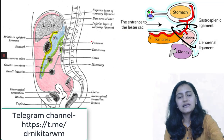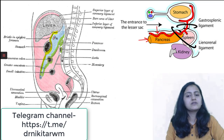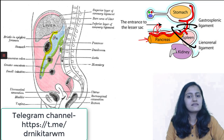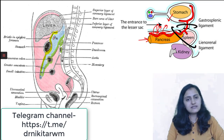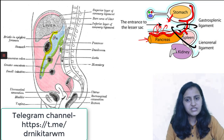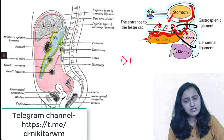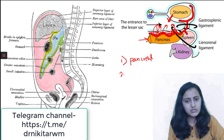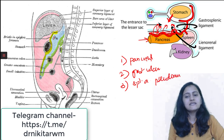What are the causes of collection in the lesser sac? The most common cause is pancreatitis, because the pancreas is posterior to the lesser sac — so whenever there is pancreatitis, fluid accumulates in the lesser sac. The second reason is perforation of a gastric or pyloric ulcer, where the collection goes posteriorly into the lesser sac. The third reason is a splenic artery pseudoaneurysm — if it ruptures, it leads to collection in the lesser sac.